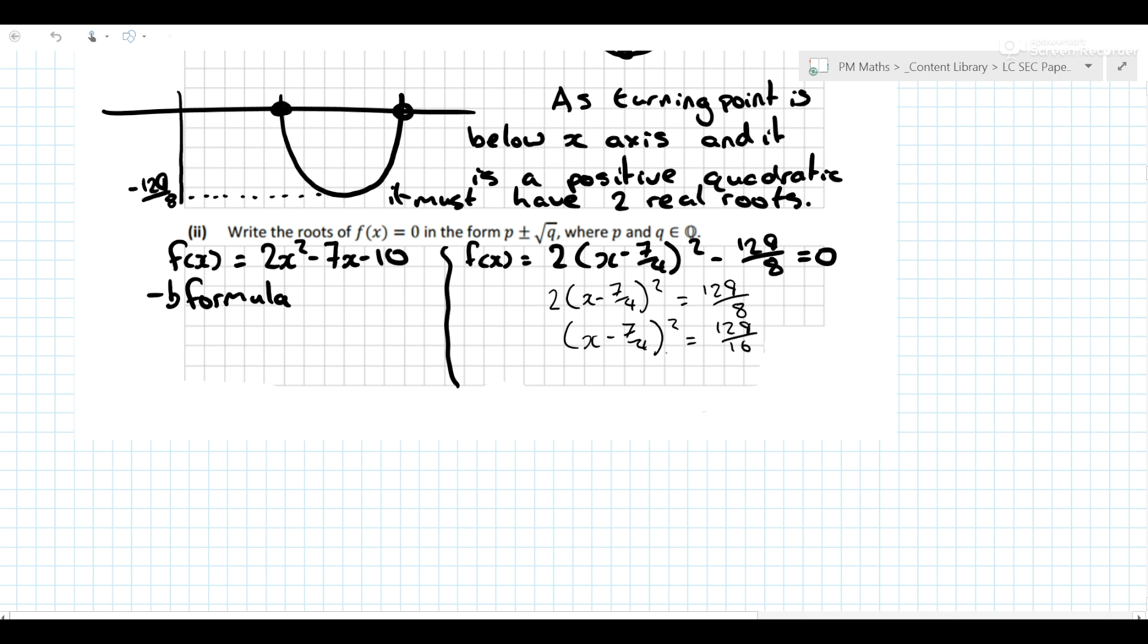Take the square root of both sides. x - 7/4 is equal to the square root of 129/16. Now I've introduced the square root, so I must take the plus and minus version of it. And x equals 7/4 plus and minus √(129/16).